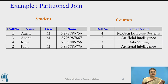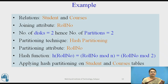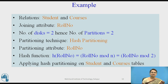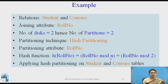Consider an example with two relations: student and courses. We want to join them on the attribute role number. We are considering 2 disks and therefore 2 partitions with 2 processors. The partitioning technique applied here is hash partitioning on the attribute role number, using the hash function H(role number) = role number mod 2. This hash partitioning is applied on both the student and courses tables.